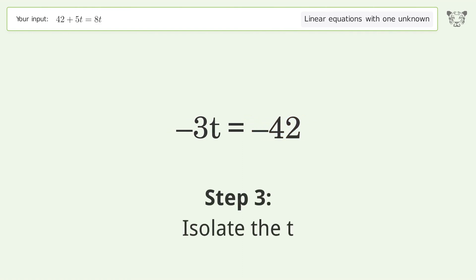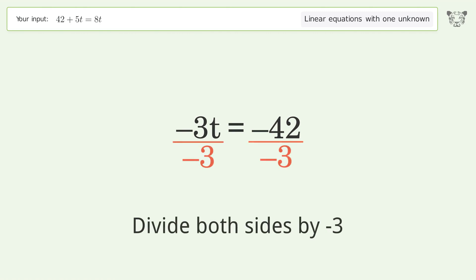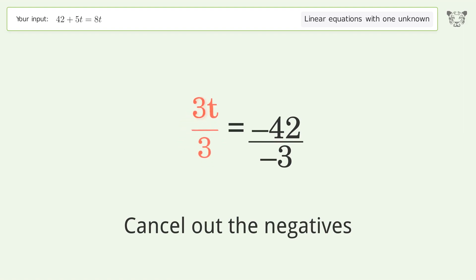Isolate the t. Divide both sides by negative 3. Cancel out the negatives. Simplify the fraction.